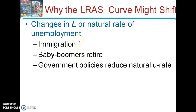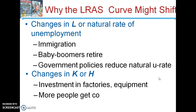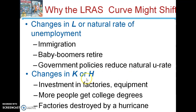Immigration and more workers can increase the overall long-run aggregate supply curve. More retirees leaving the labor force could theoretically reduce overall production. Government policies that reduce the natural rate of unemployment — for example, eliminating some structural unemployment such as removing minimum wage laws — would reduce the natural rate of unemployment and increase the long-run aggregate supply. More machinery, human capital, and knowledge all shift the overall supply to the right, while natural disasters or war could shift the curve to the left.